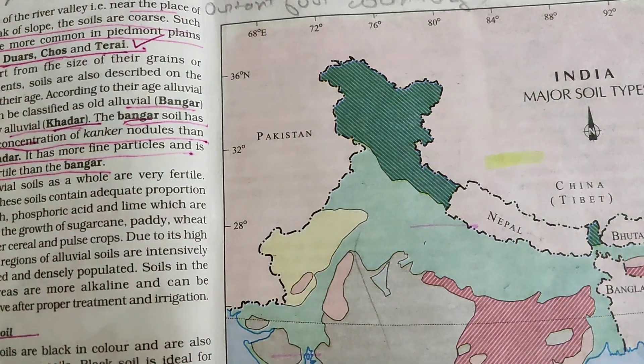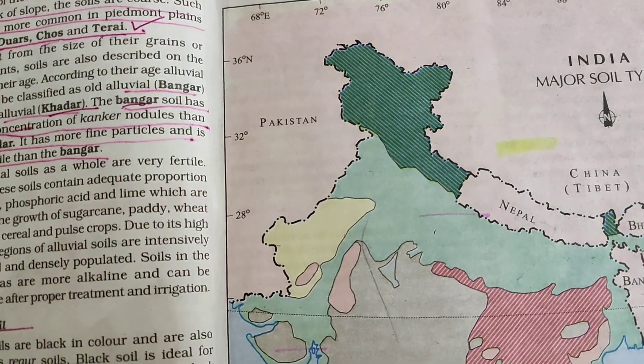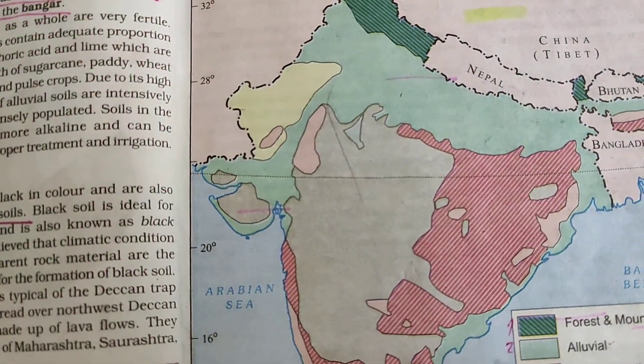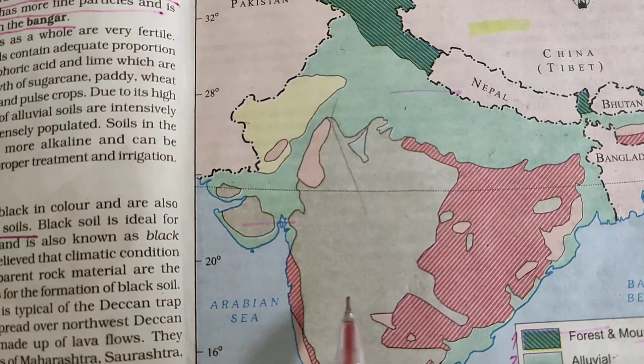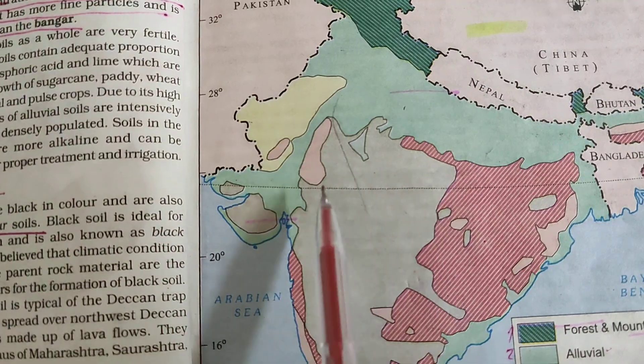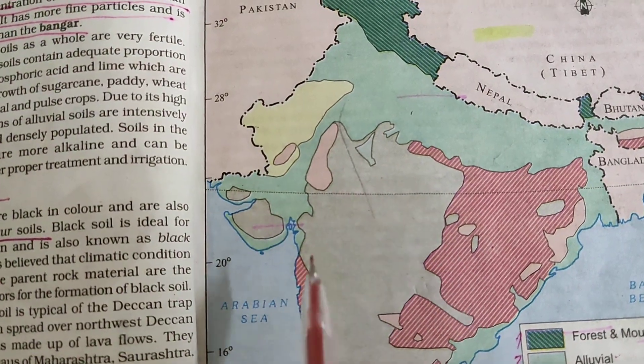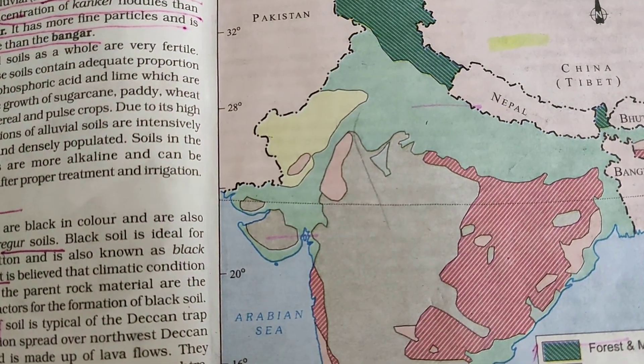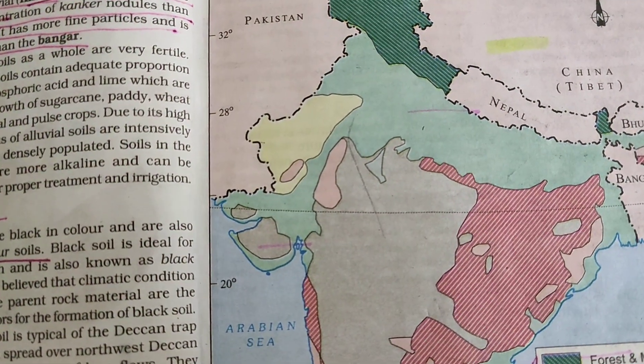Black soil is found in the area of Maharashtra and Madhya Pradesh, and some part of Karnataka.